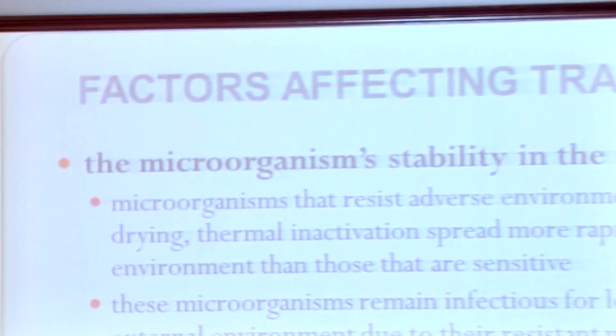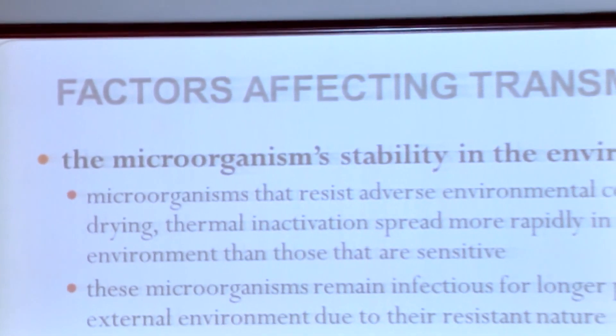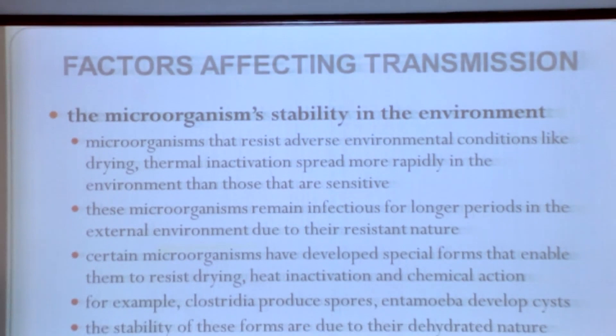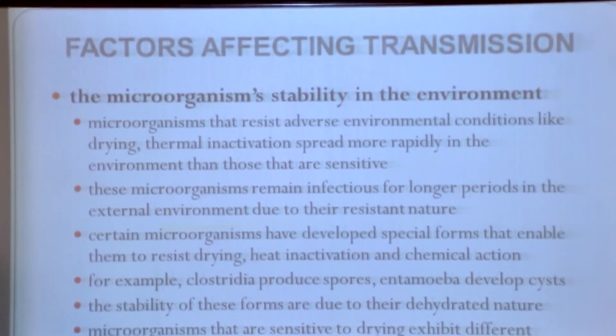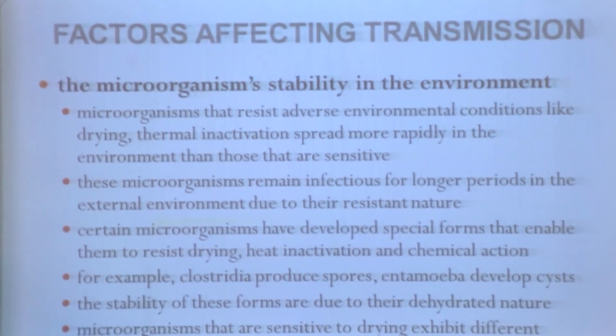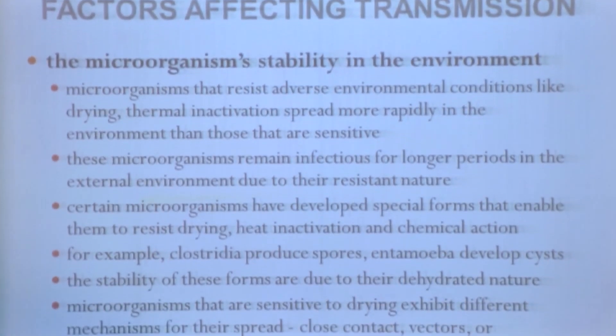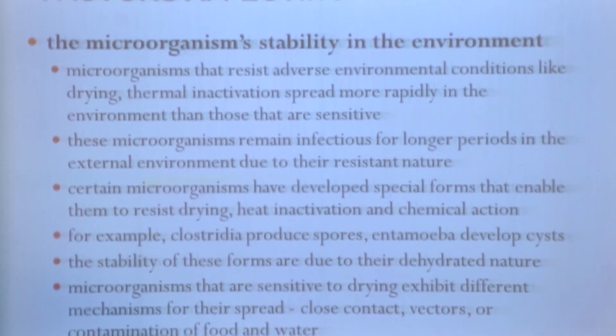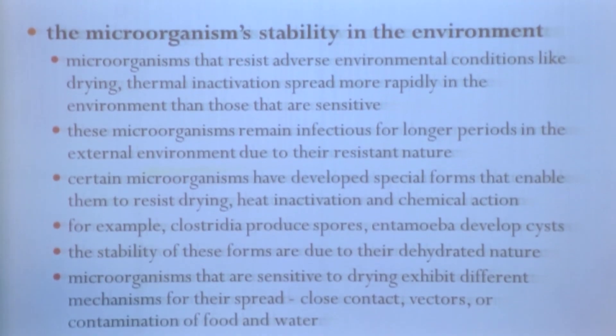For example, bacteria of the group Clostridea will produce spores, and the protozoan Entamoeba will produce cysts. Spores are resistant structures. If an organism is sensitive to environmental conditions, it will need a longer survival period to cause infection.